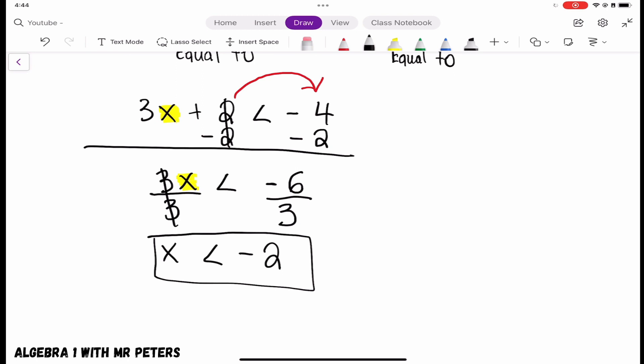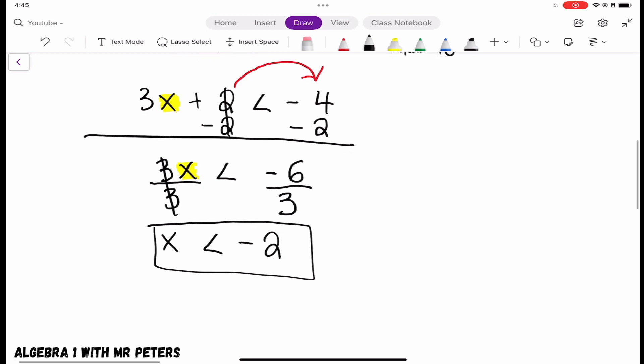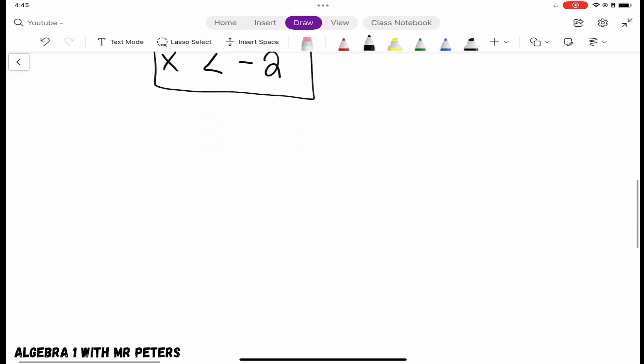However, there is one key difference when it comes to solving inequalities. And the difference is this. When we multiply and divide by a negative x, we have to, have to flip our inequality symbol.